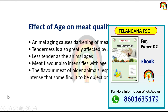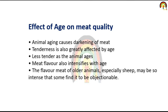Effect of age on meat quality: animal ageing causes darkening of meat — as the animal ages, meat converts to a dark color. Tenderness is also greatly affected by age; meat is less tender as the animal ages and more tender when the animal is young. Meat flavor also intensifies with age. Flavor of older animals, especially sheep, may be so intense that some find it objectionable.